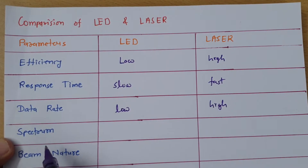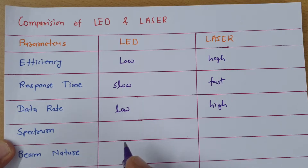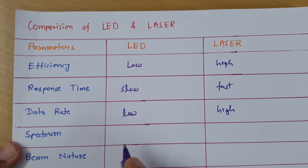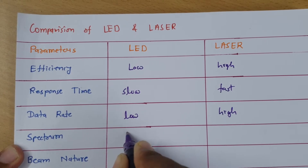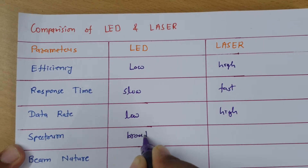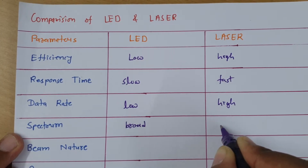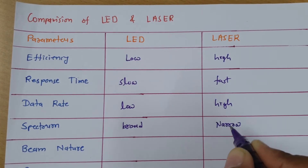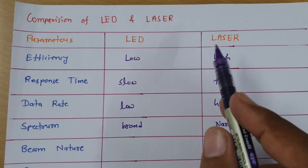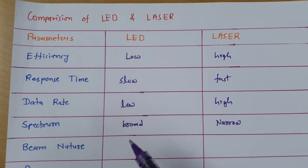When we talk about spectrum, the spectral width will be broad in the case of LED — very many wavelengths present. With laser, the spectral width will be sharp or narrow, meaning very few wavelengths are present.